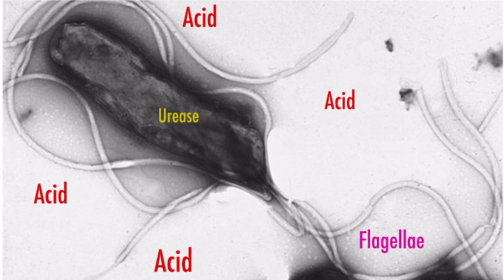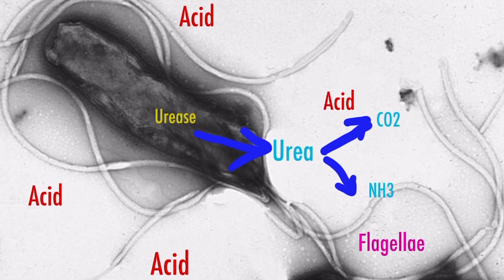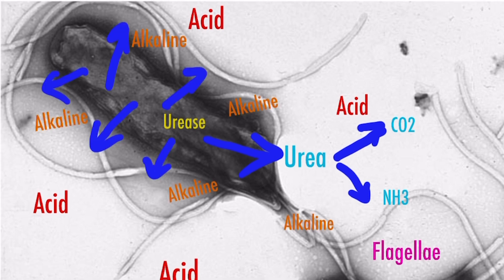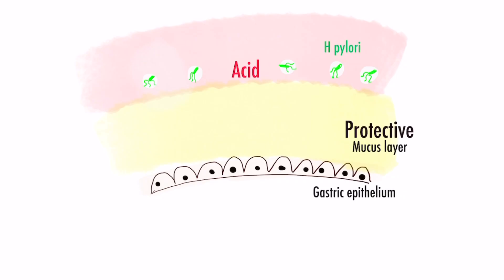Up to 15% of protein in H. pylori is urease enzyme. Urease acts on urea in the surrounding area and breaks it into carbon dioxide and ammonia. The ammonium ion alkalizes the surrounding area. So H. pylori creates an alkaline environment all around it with the help of urease — in a way forming a shield of ammonium around it, protecting it from acid. But sooner or later this mechanism will become exhausted, so H. pylori uses flagella to burrow inside the mucous layer and reach the epithelium, where it is now protected from acid by the mucous layer.